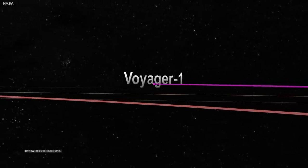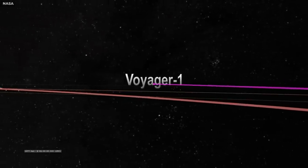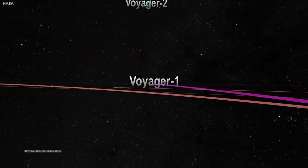Voyager 1 is a NASA space probe launched on September 5, 1977, as part of the Voyager program to study the outer solar system and interstellar space beyond the sun's heliosphere.